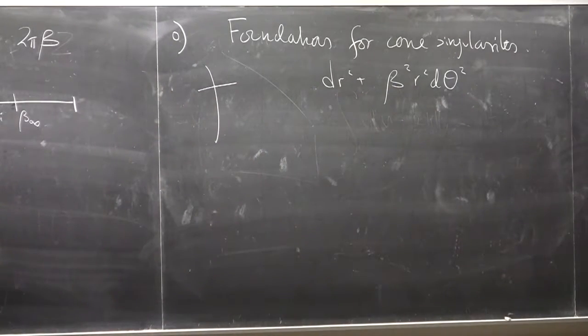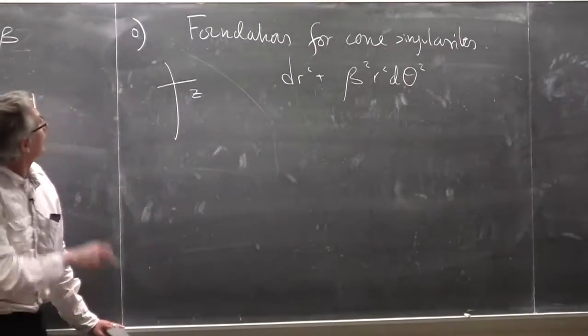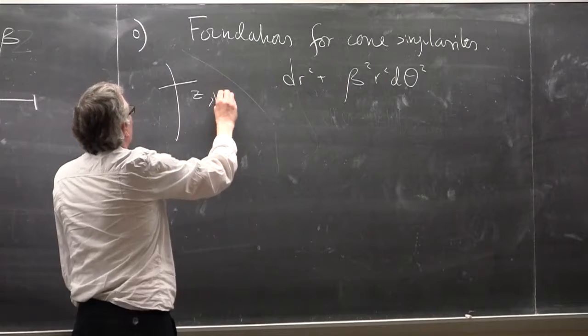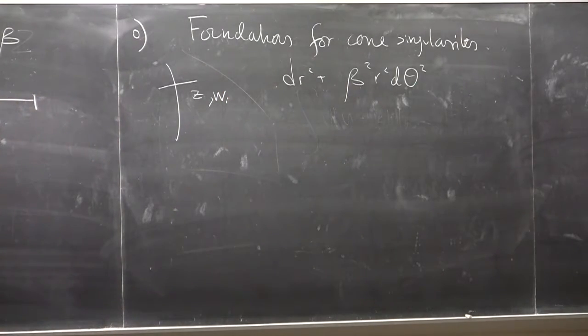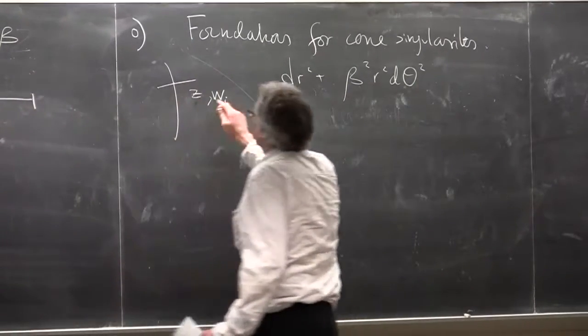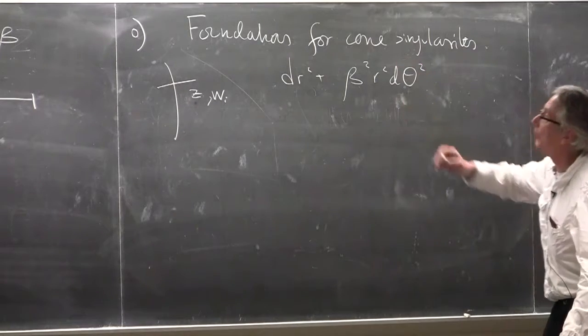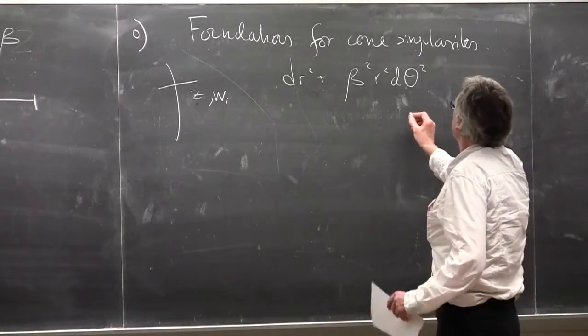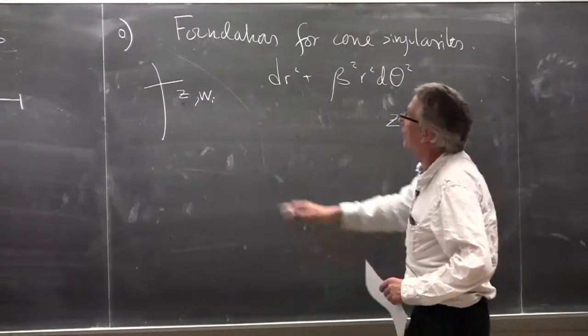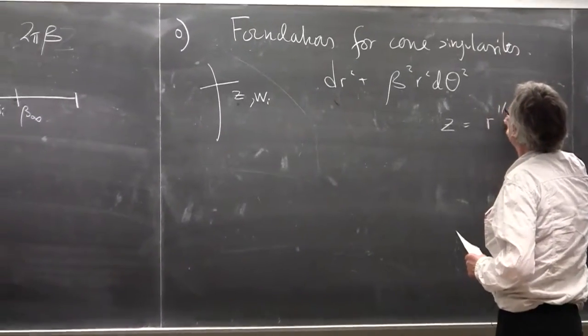In terms of a standard complex coordinate, say z transverse to d and w along d, the divisor is locally defined by the equation z equals zero. In this basic model, we would take these complex coordinates and these cone coordinates related by a formula like this.